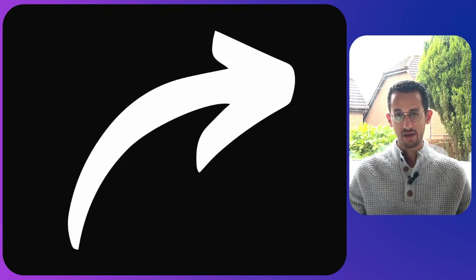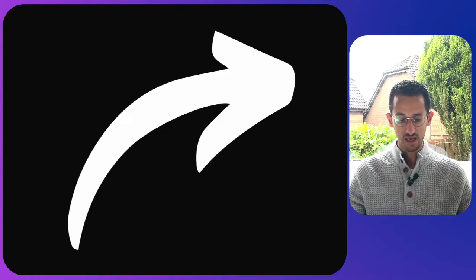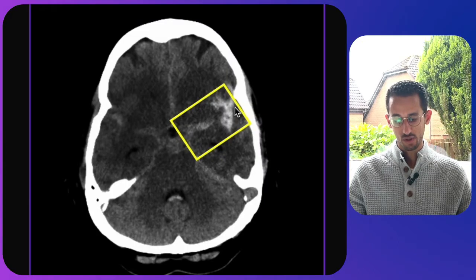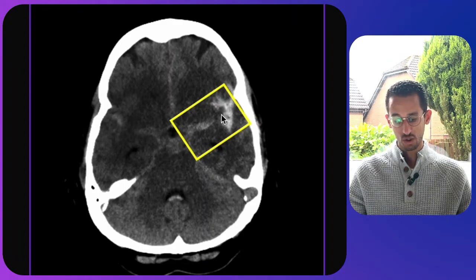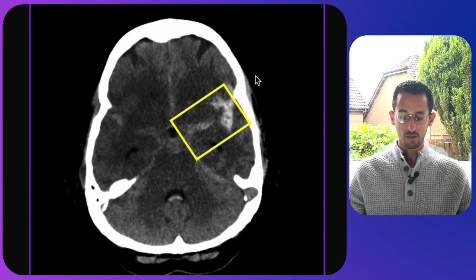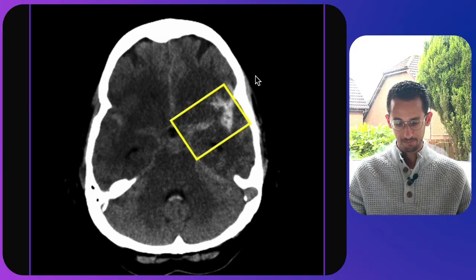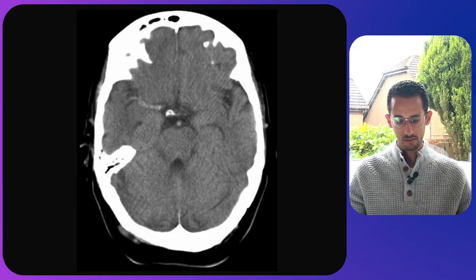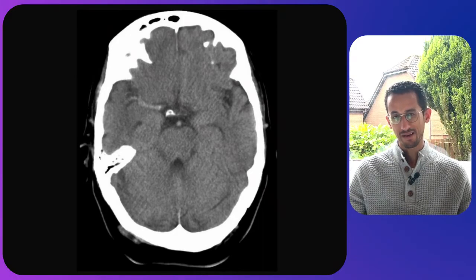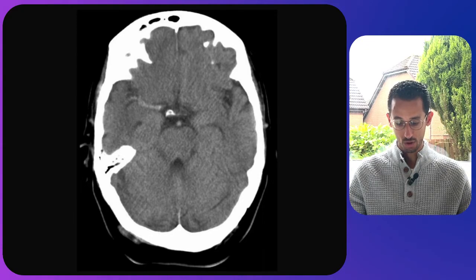The next picture shows an arrow sign, seen in MCA rupture when we have an MCA aneurysm. You can see subarachnoid hemorrhage on this CT scan extending around the basal cistern, but more obvious on the left sylvian fissure, which looks like an arrow pointing outside the skull — likely a rupture of a middle cerebral artery aneurysm. The dense cord sign can also be seen in MCA infarction.